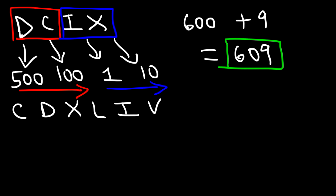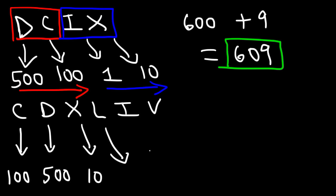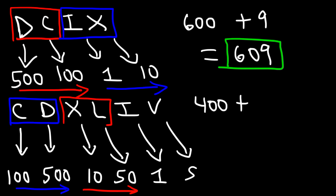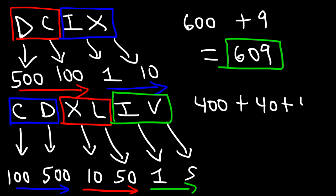For CDXLIV: C is 100, D is 500 — ascending, so subtract: 500 minus 100 is 400. X is 10, L is 50 — ascending, so subtract: 50 minus 10 is 40. I is 1, V is 5 — ascending, so subtract: 5 minus 1 is 4. So 400 plus 40 plus 4 equals 444.